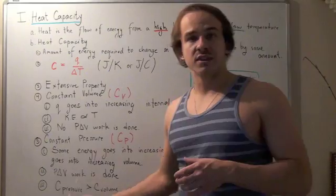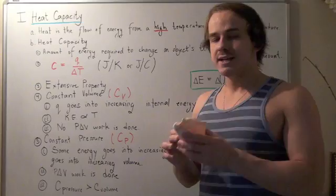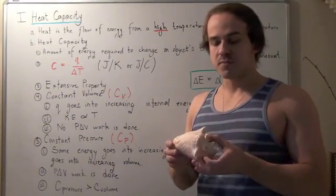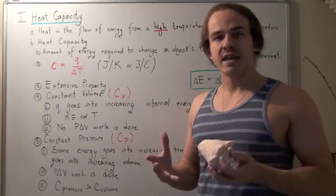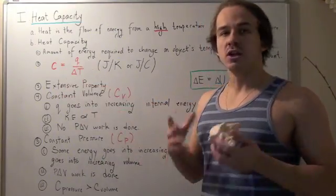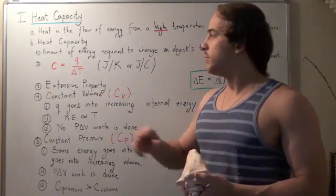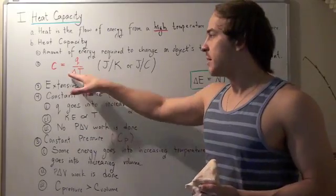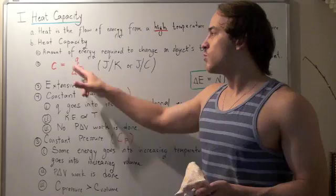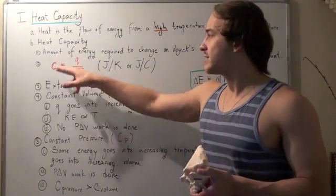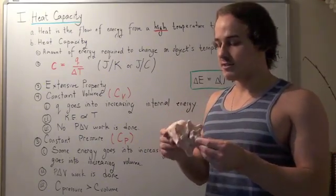Suppose we take an object — this seashell — and we want to find the energy input required to change this object's temperature by 5 degrees Celsius. The way we find that is we use this formula. We look up the particular C value for this substance, plug that in, plug the change in temperature in, and we find the energy input required to change this object's temperature by 5 degrees Celsius.